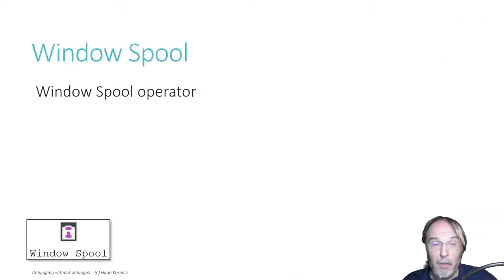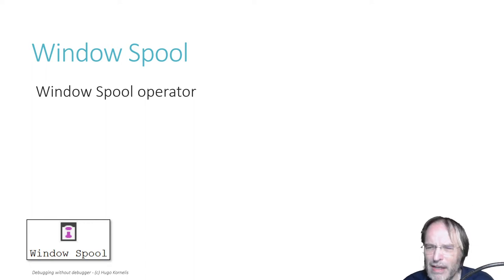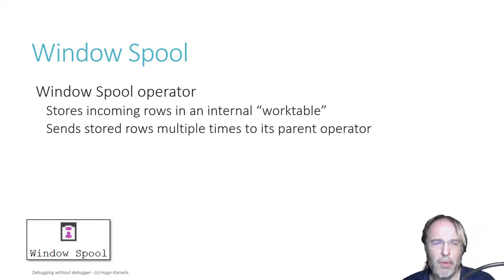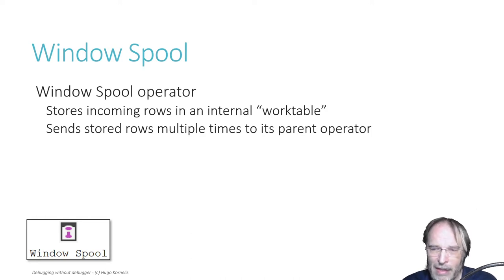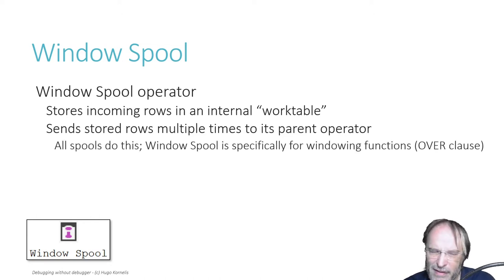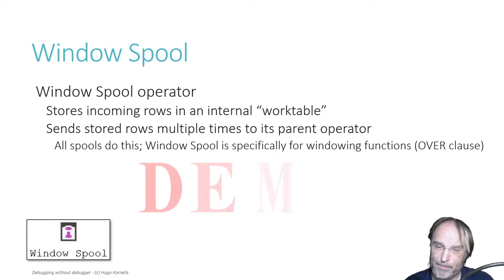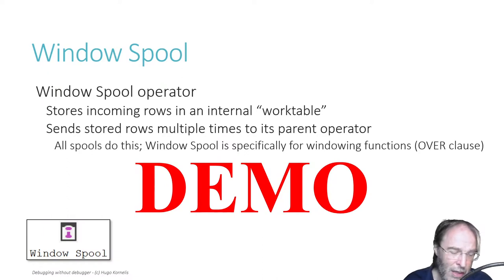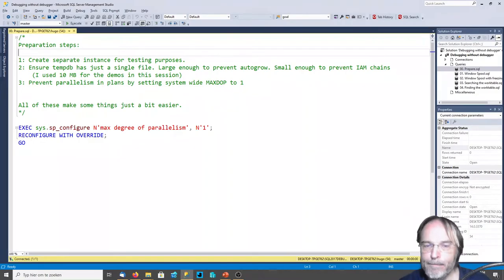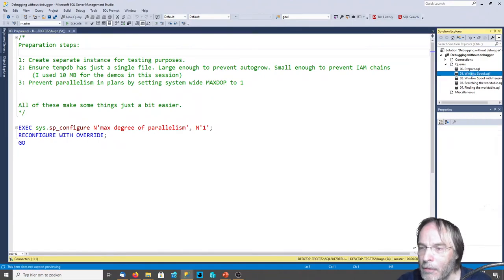With that out of the way, welcome to the session. We are going to investigate the internals of an operator called Window Spool. What the Window Spool does is it's an operator in execution plans that reads rows, stores them internally in a work table, and then the parent operator can receive multiple copies of those rows. All spool operators do that - Table Spool and Index Spool do the same thing - but Window Spool has specific functionality to make it work for windowing functions, the so-called OVER clause.